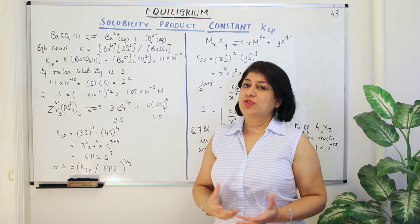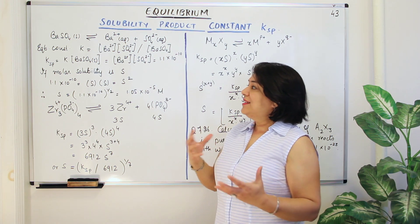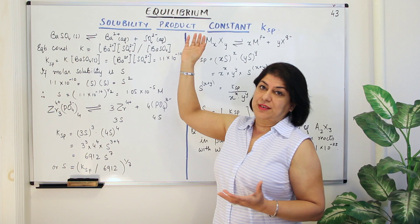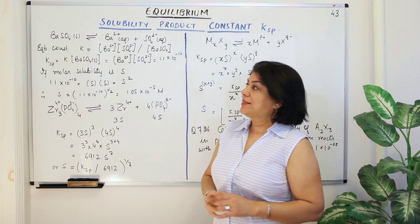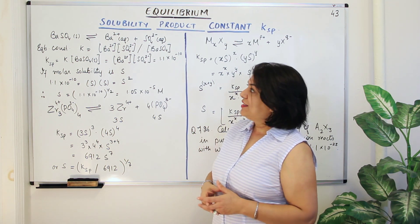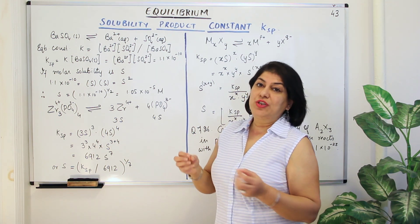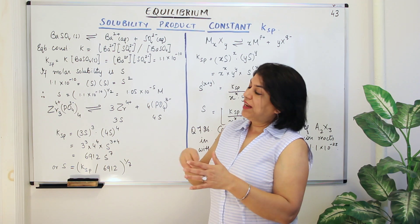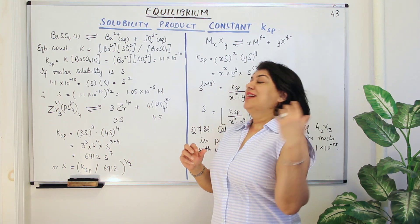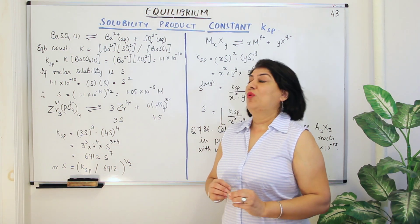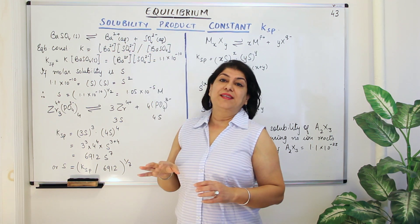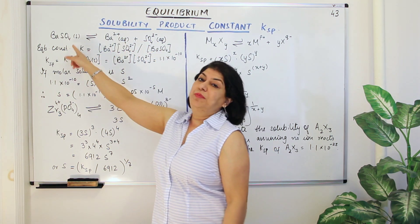We have sparingly soluble salts, and when they dissociate we are going to calculate the solubility product of these salts. For example, we start with barium sulphate — a solid salt which is added to water. When you dissolve it, it forms a saturated solution in water. This saturated solution of barium ions and sulphate ions is in equilibrium with the solid barium sulphate.